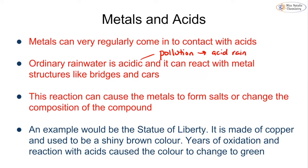Rainwater is naturally slightly acidic as well, and when this rainwater gets onto metal structures like bridges and cars it can react with the metal. Sometimes it can react to form a salt, or it can change the composition or even the colour of the compound.